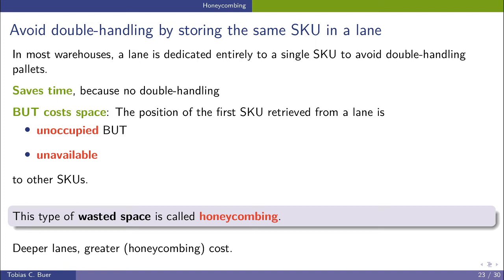The position of the first SKU is retrieved from a lane is unoccupied but unavailable to other SKUs. So when we pick a pallet of Pepsi from a Pepsi lane, then we can only store Pepsi in this lane. But we are not allowed to store Mountain Dew in this lane.